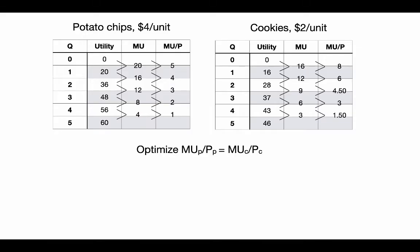So I might go from this to saying, okay, let's get the marginal utility for each of these units. I put the values in between the numbers here just to make it clear what unit we're talking about. The first unit gives me an extra 20, the second unit gives me an extra 16. This way, if I put it halfway in between the two, it's clear whether I mean from 0 to 1 or 1 to 2. So the second unit gives me 16 extra utils for a total of 36, and so on.